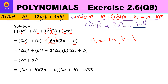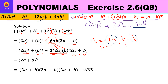Now 6ab is nothing but 3 × a × b as given in the identity, where a is 2a and b is b. So we have written it as 3 × 2a × b, with (a+b) inside the bracket — exactly as in the identity. Once we have identified a = 2a and b = b, the factors are (a+b)³, that is (2a+b)³, which means multiplying the base three times: (2a+b)(2a+b)(2a+b).